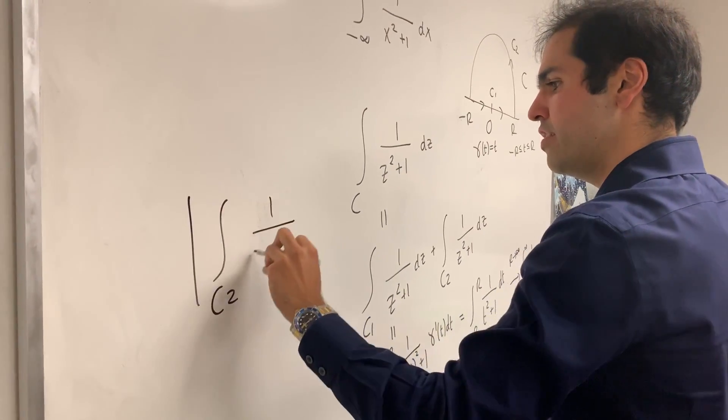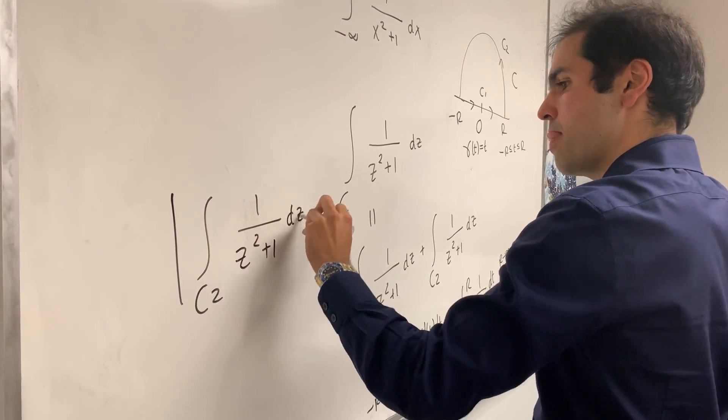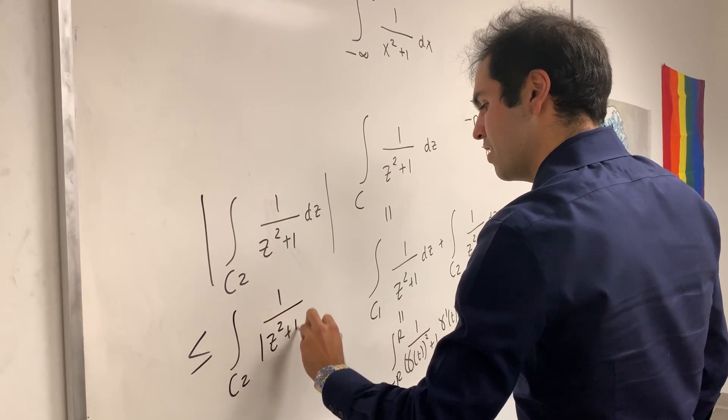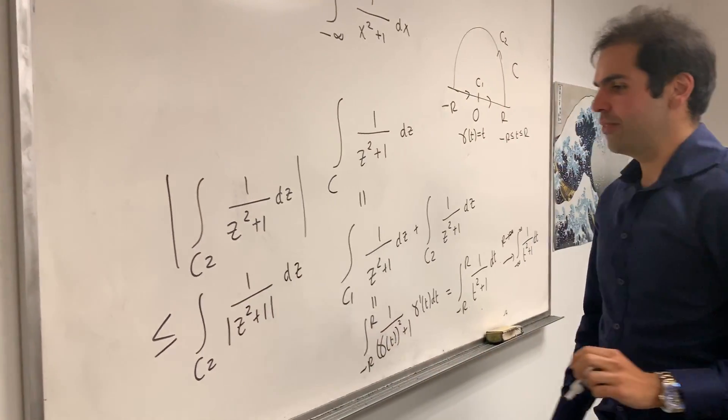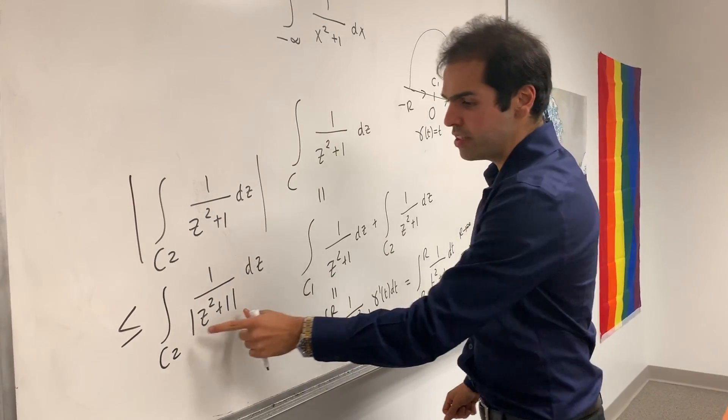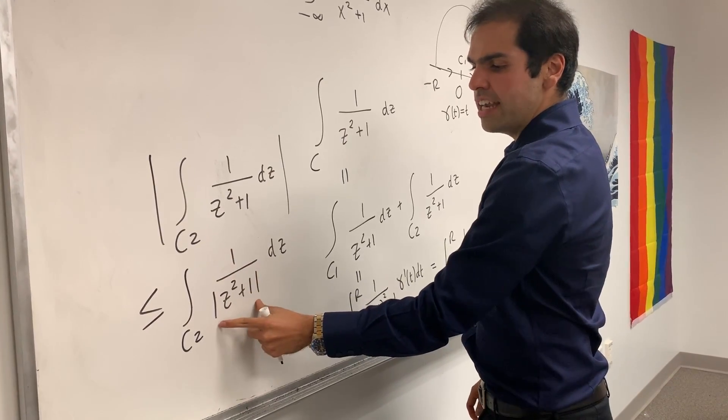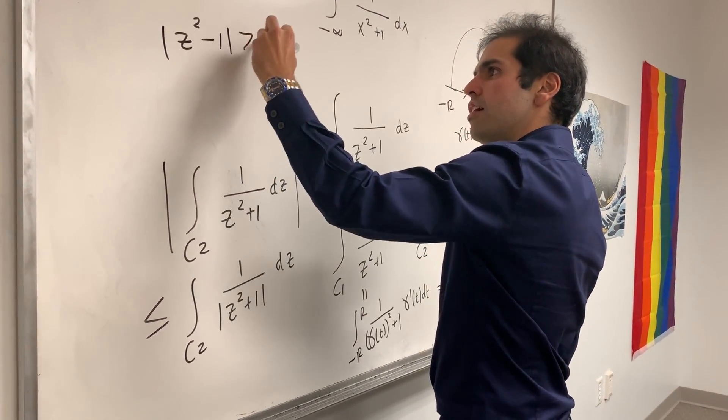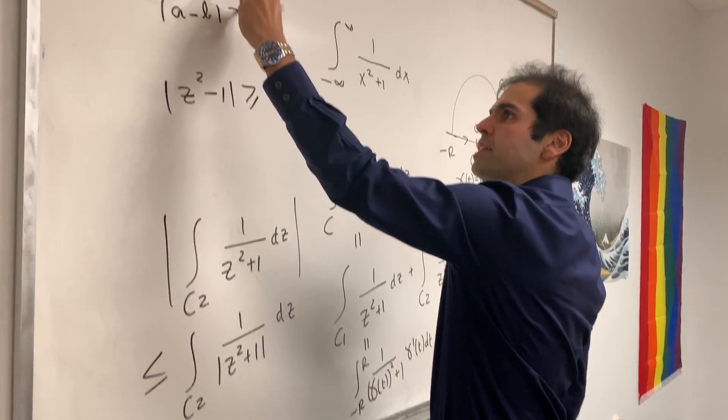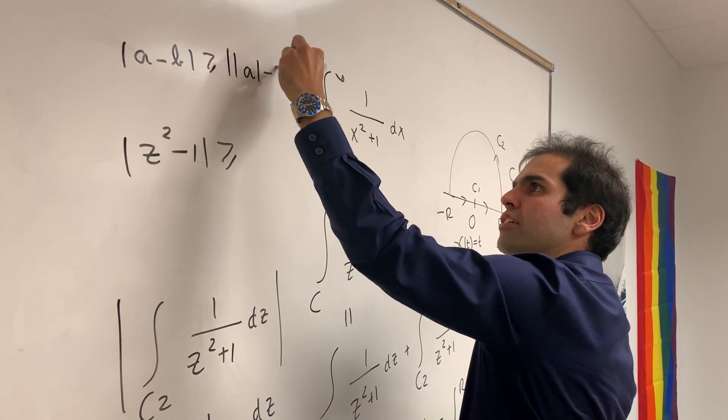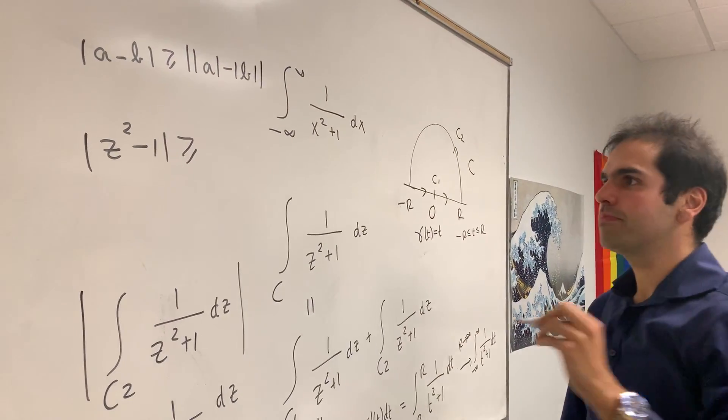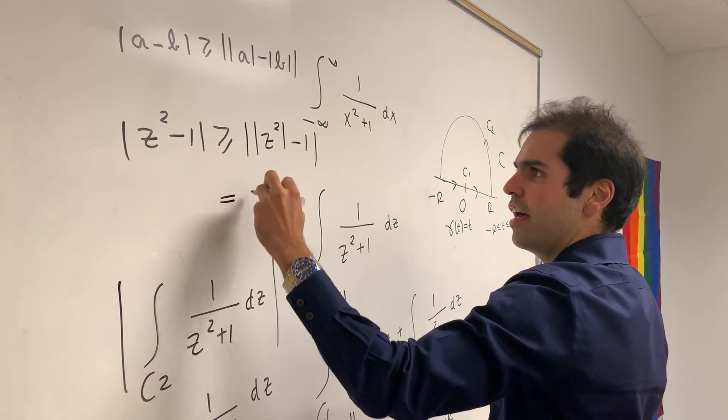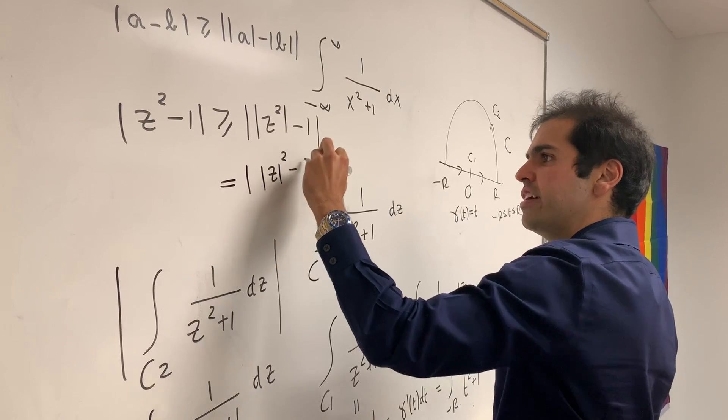So estimate. Put absolute values of this integral over c2 of 1 over z squared plus 1 dz. Now absolute value of the integral is less than integral of the absolute value. And what do I want to say? Then we want to show this is smaller than something. So let's show this is bigger than something. And for this, we have to use what's called the reverse triangle inequality, which says absolute value of a minus b is greater or equal to the absolute value of the absolute value of a minus the absolute value of b.